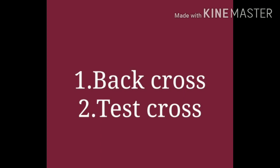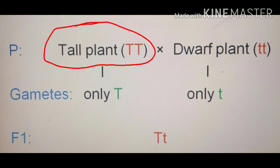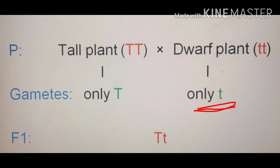First we have to describe the definition of back cross and test cross, and second we have to see the different scenarios of test cross. In the diagram you can clearly see that a pure tall plant crosses with a pure dwarf plant. From those parents, gametes are produced: capital T from the TT genotype, and small t from the tt genotype. Finally they fuse to form the F1 progeny as capital T small t (Tt).